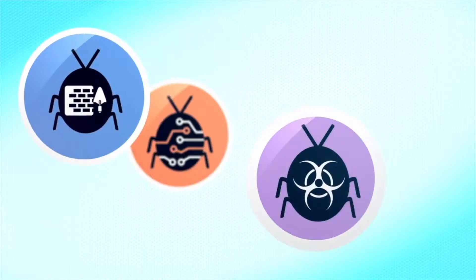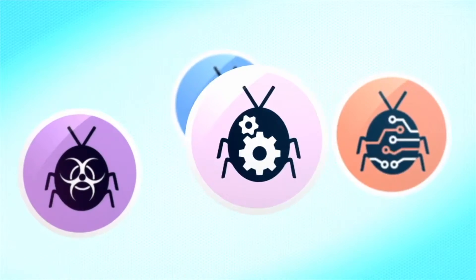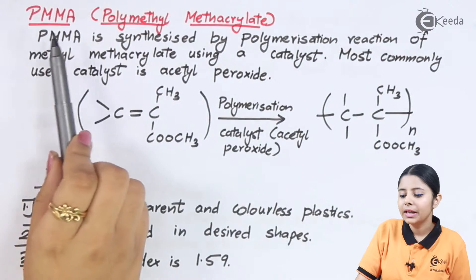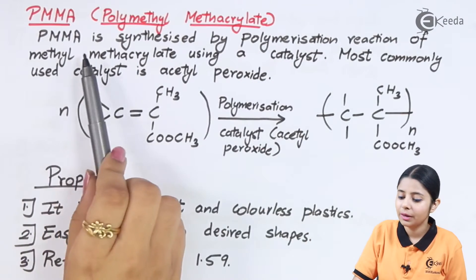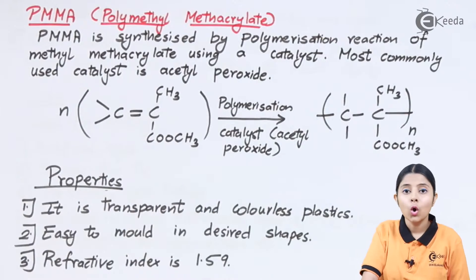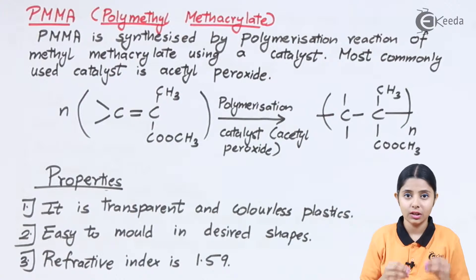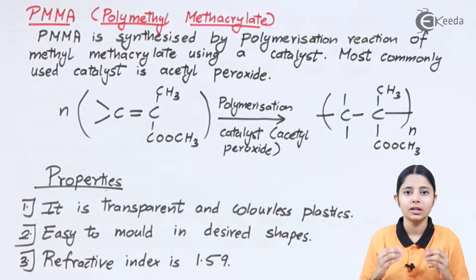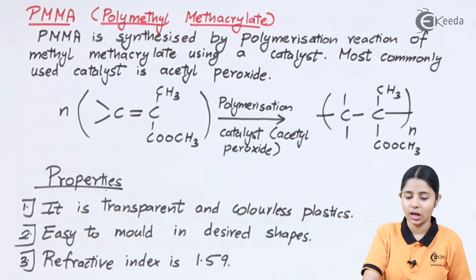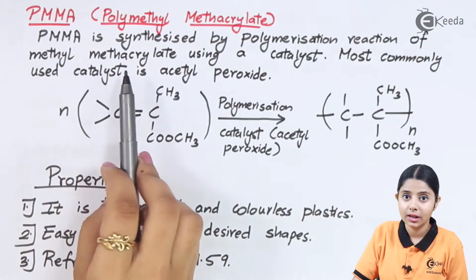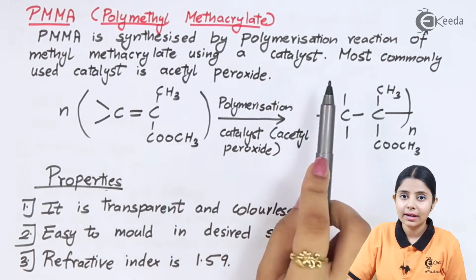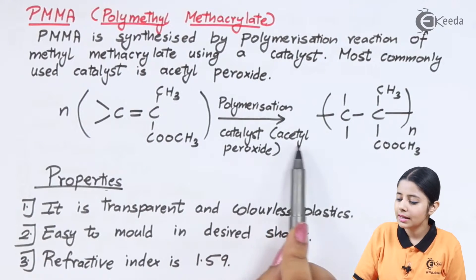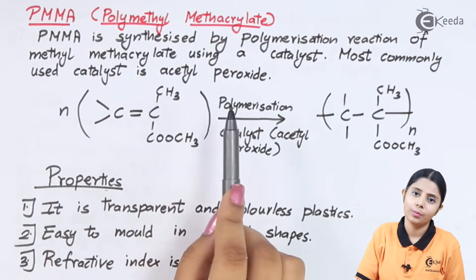PMMA is synthesized by a polymerization reaction. Each and every reaction in this chapter will be known as a polymerization reaction. When the product is a polymer, we call it a polymerization reaction — specifically here, it is the polymerization reaction of methyl methacrylate. The catalyst used is acetyl peroxide, which is the most commonly used catalyst.